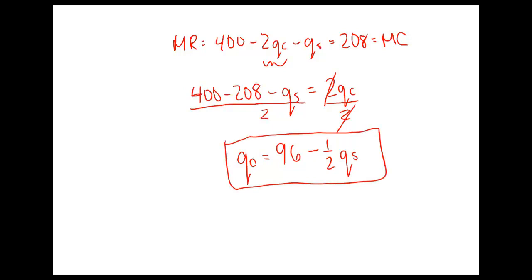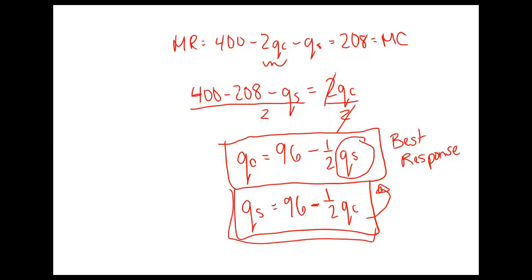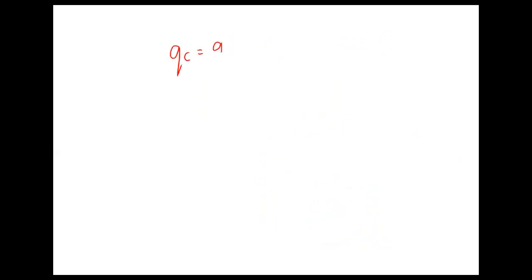Similarly, we would get the best response function for Swish Airlines, and it would look the same with QC here. For a Nash equilibrium, we would have an intersection of these two best response curves so that neither of us would want to change our quantity at that point. We can set these two curves equal to each other by substituting this equation into here. Instead of QS, we'll substitute in the right-hand side for what QS equals.